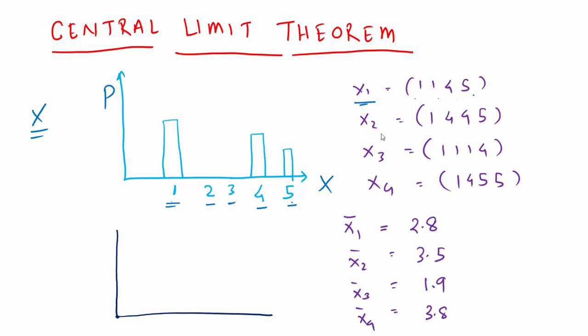The second time we did the trial, we got 1, 4, 4, and then 5. The third time we did it and we got 1, 1, 1, 4. We can repeat that for n number of times, many number of times, but we just did it for 4 times. The last time it is 1, 4, 5, 5.